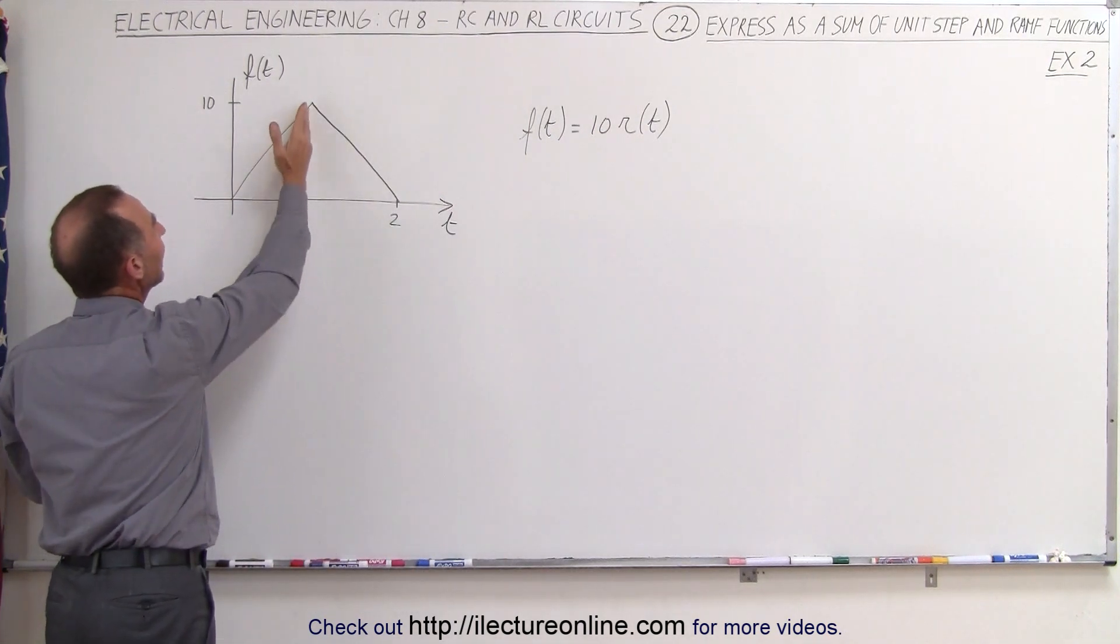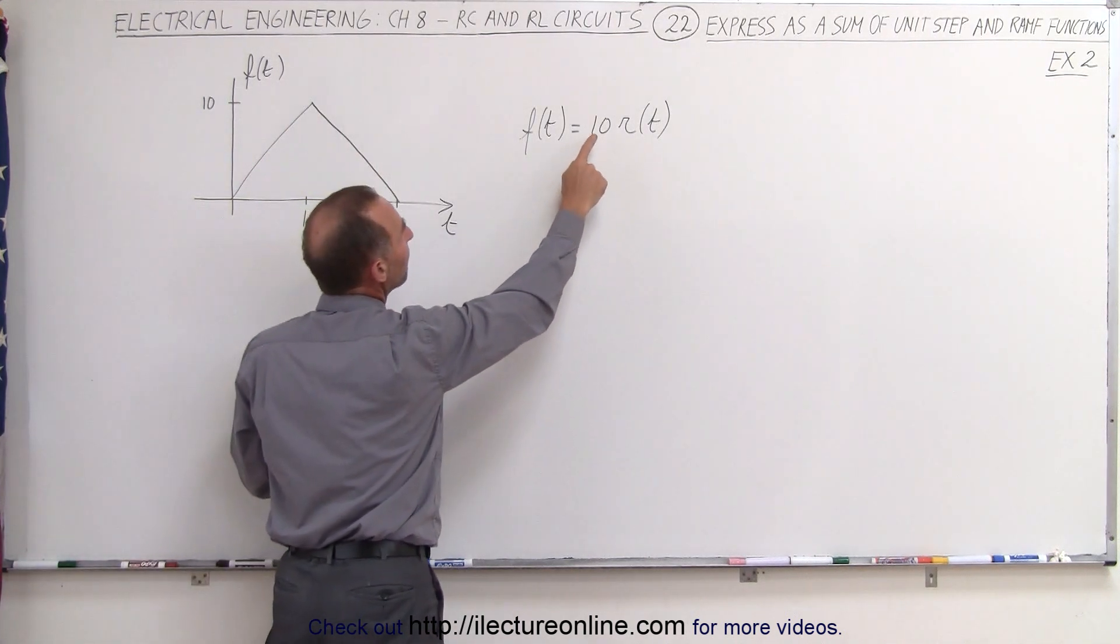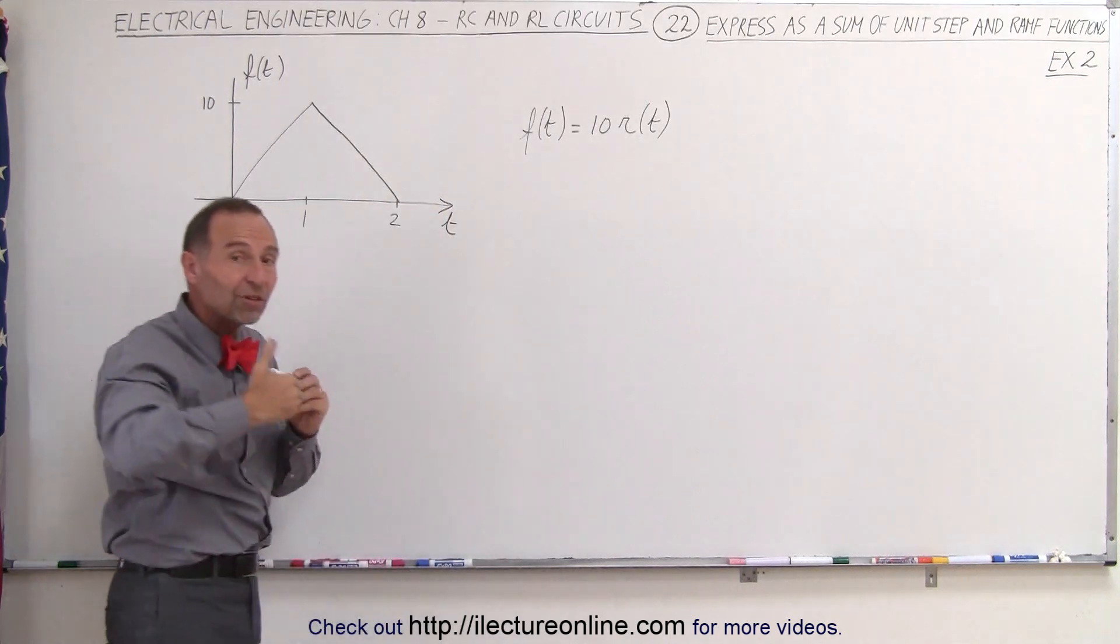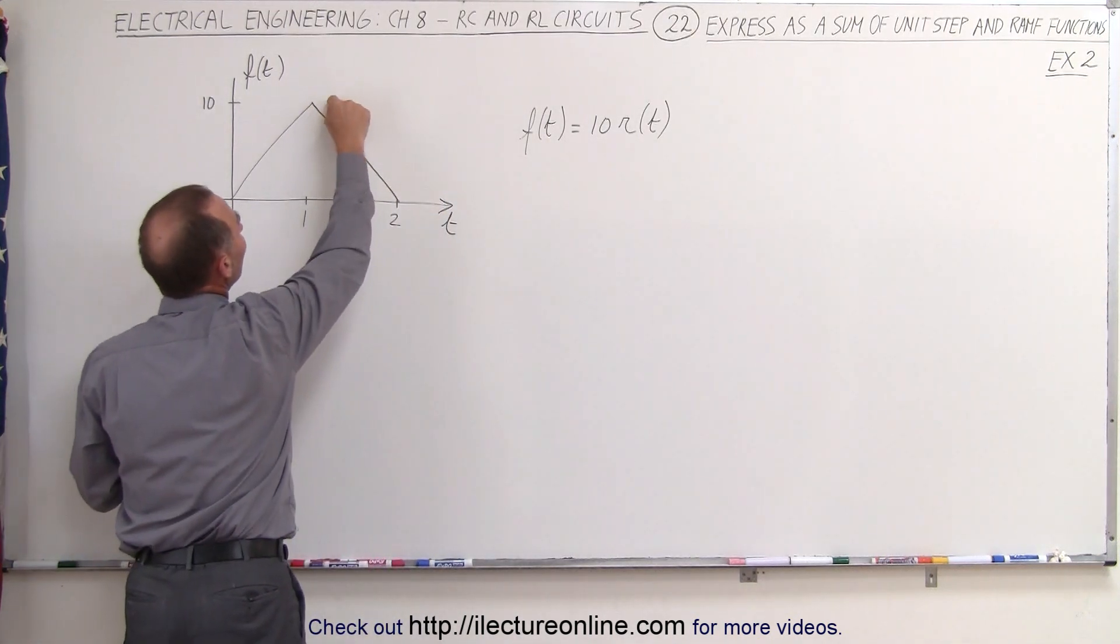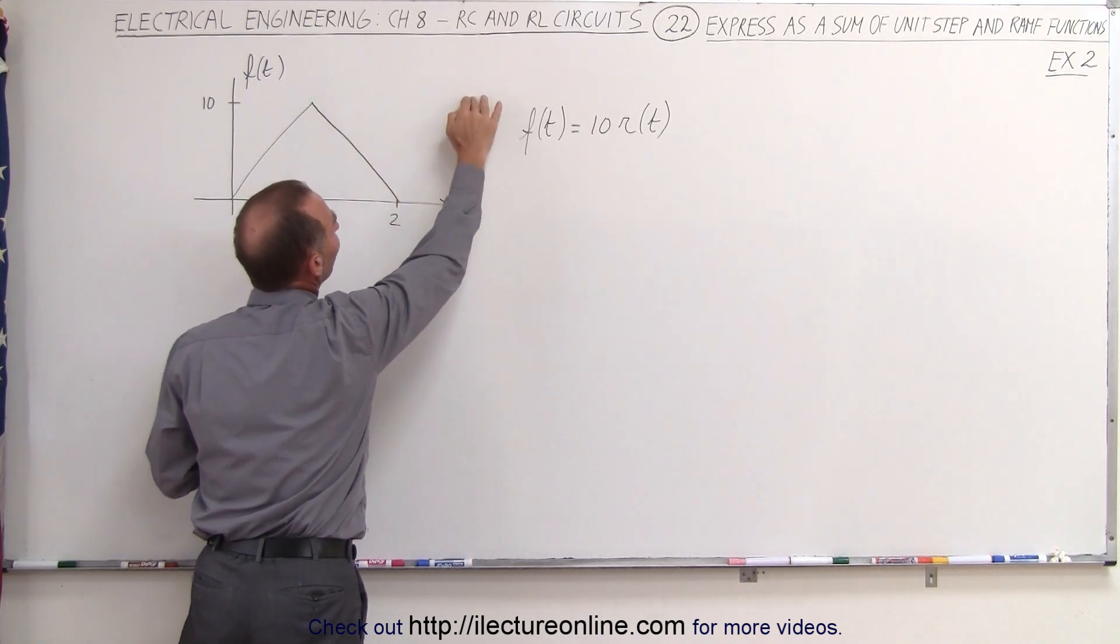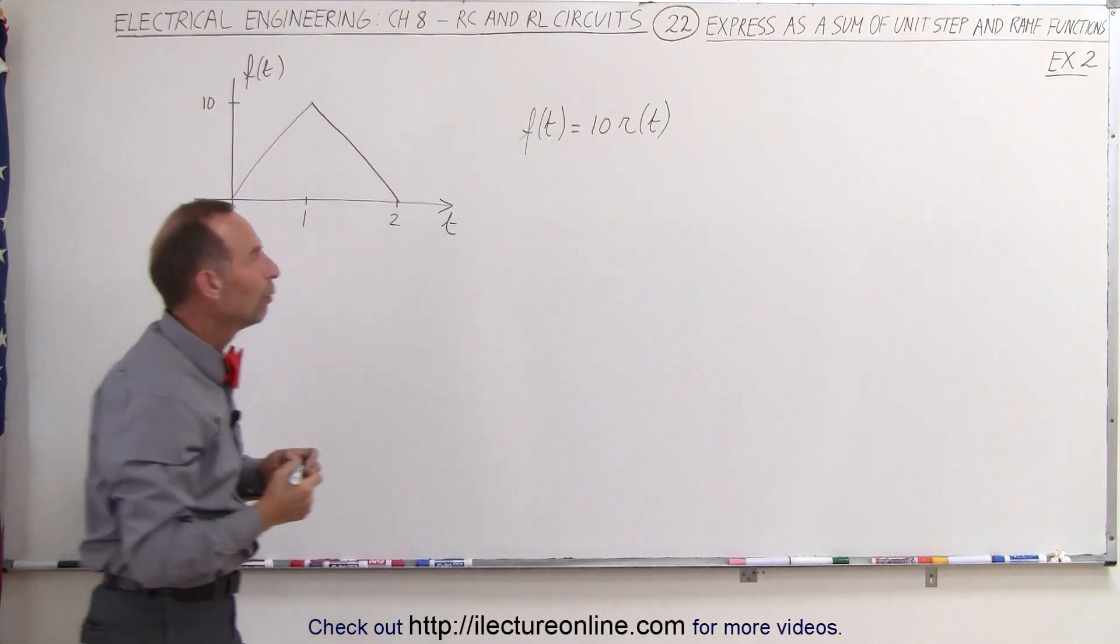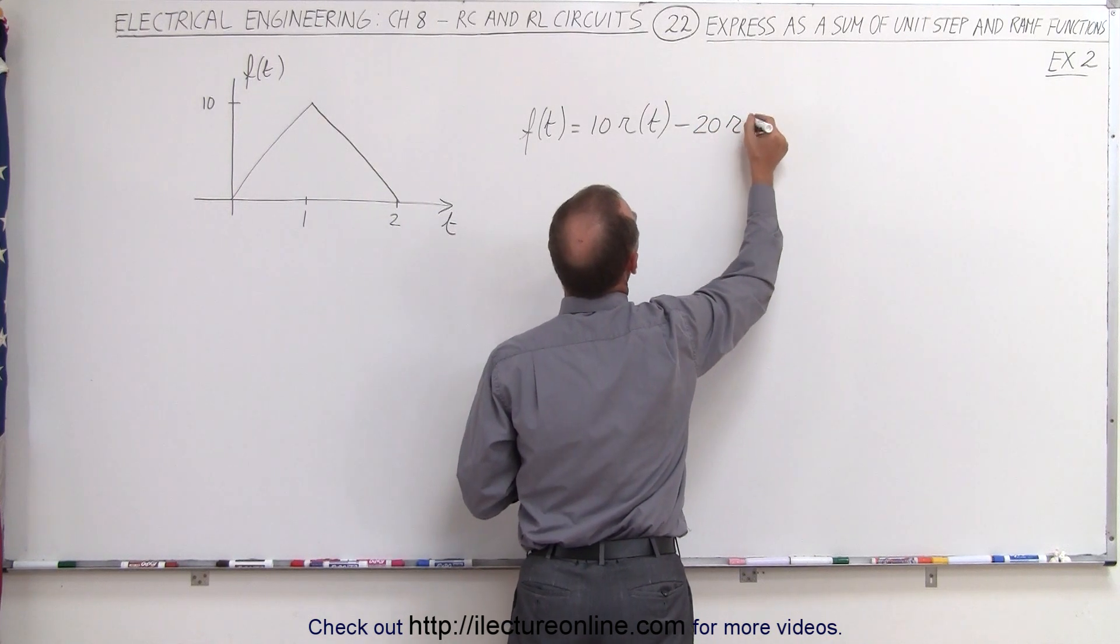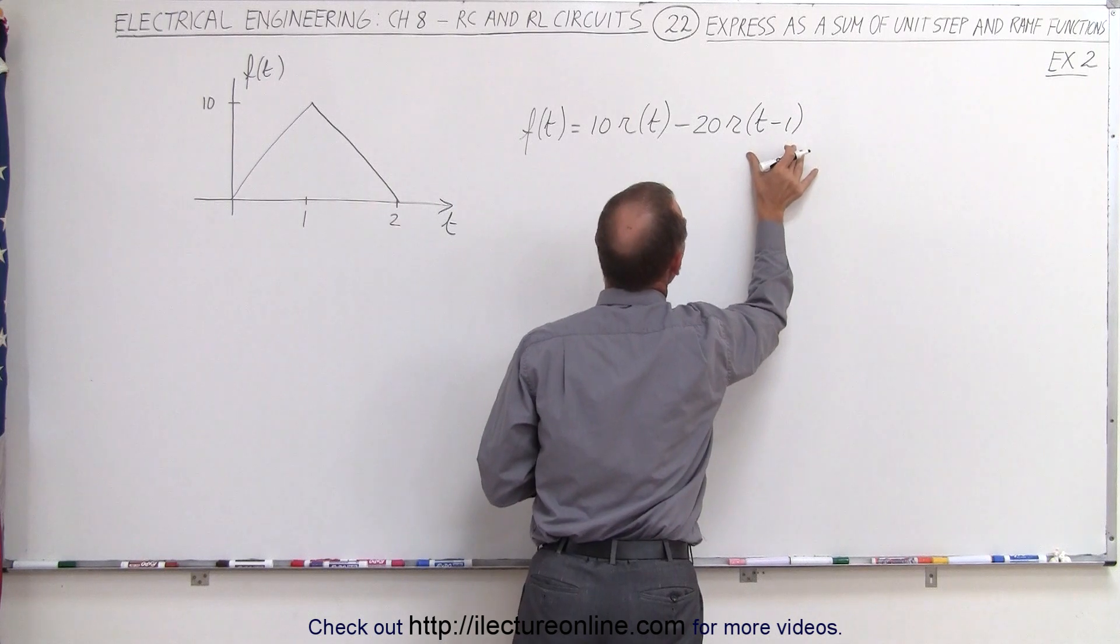Now, after one second, you need to negate the first function, so for that, you're going to need to add a minus ten r starting at t minus one, because it's going to be shifted by one second. You want to start it here, but that would then give you an input that is now equal to ten going on forever. But you actually want a negative slope, so you need to add another negative ten for a total of minus 20 times r of t minus one, because it's going to start at t minus one.